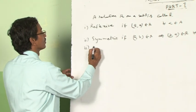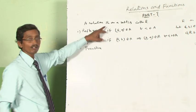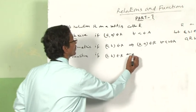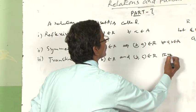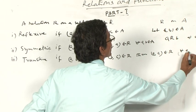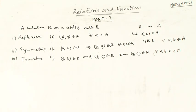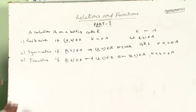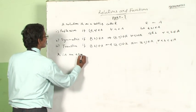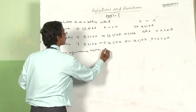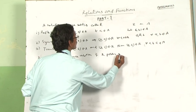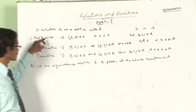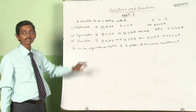The third type is transitive relation. A relation R on a set A is called transitive if A comma B belongs to R and B comma C belongs to R, then A comma C also belongs to R, for every A, B, C belonging to set A. If a relation possesses all three of these properties — reflexive, symmetric, and transitive — then the relation R is called an equivalence relation.